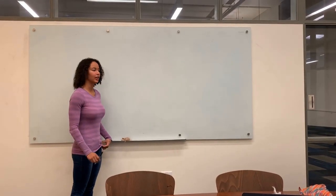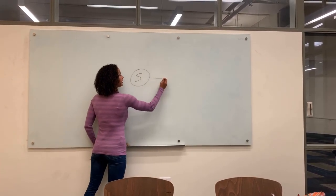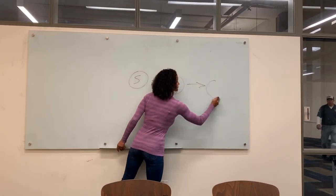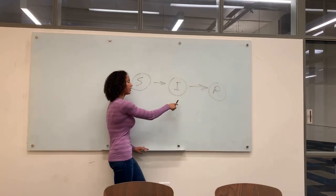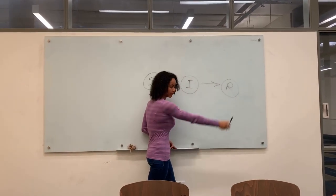First, we are going to start with the simplest model that we learned in class, the SIR model. S standing for susceptible individuals, I standing for infected individuals, and R standing for recovering individuals.